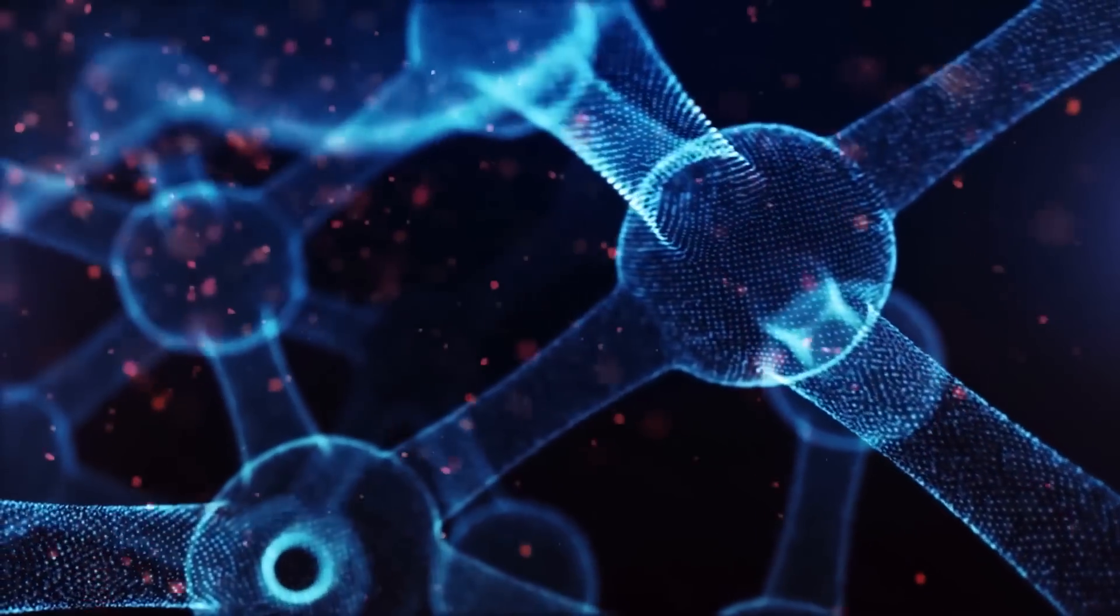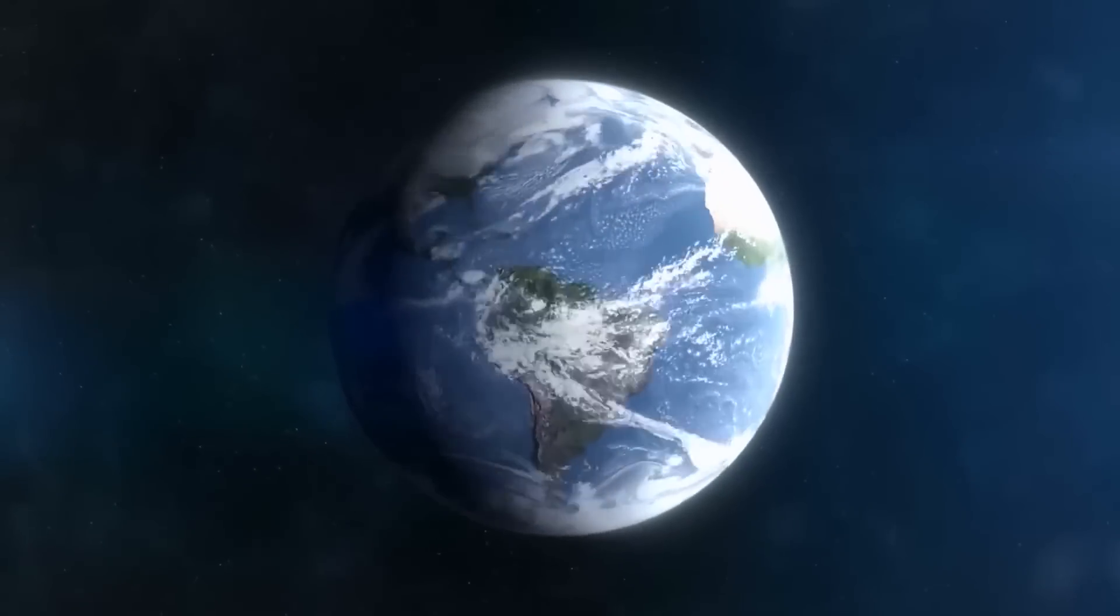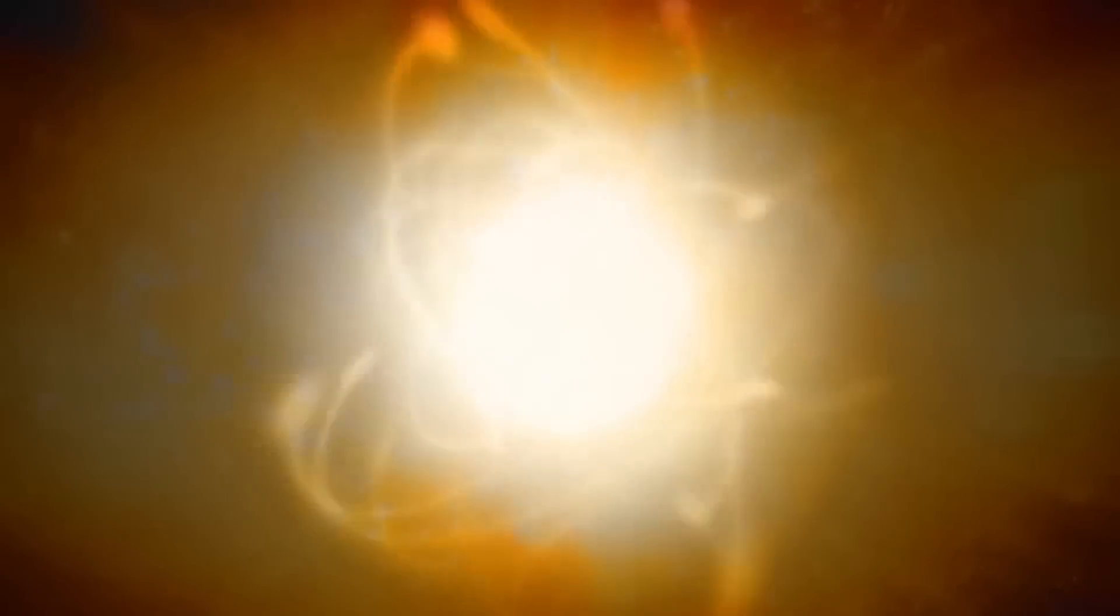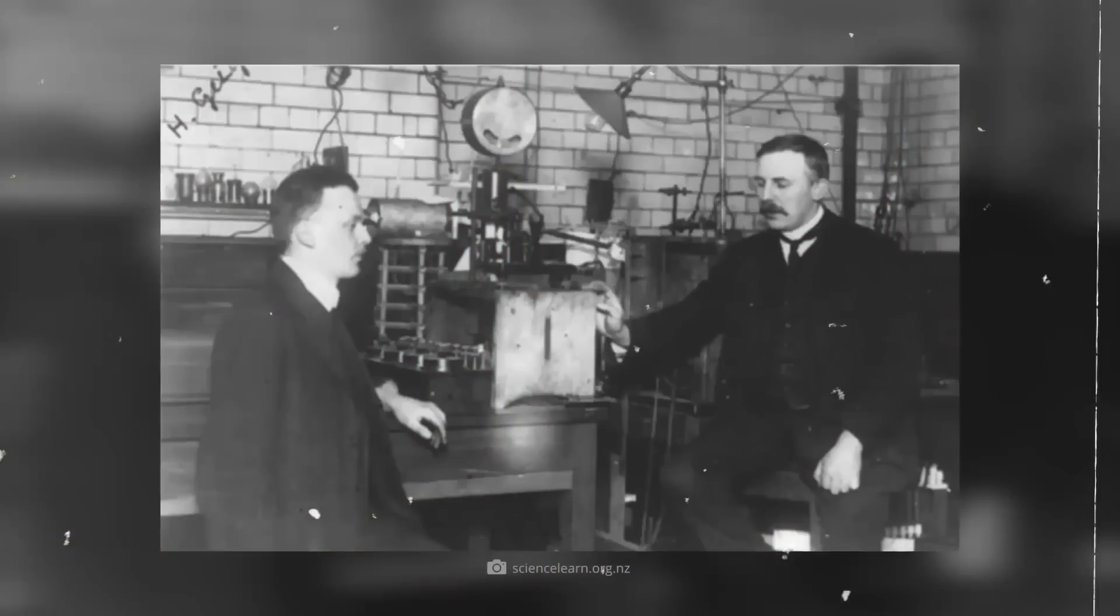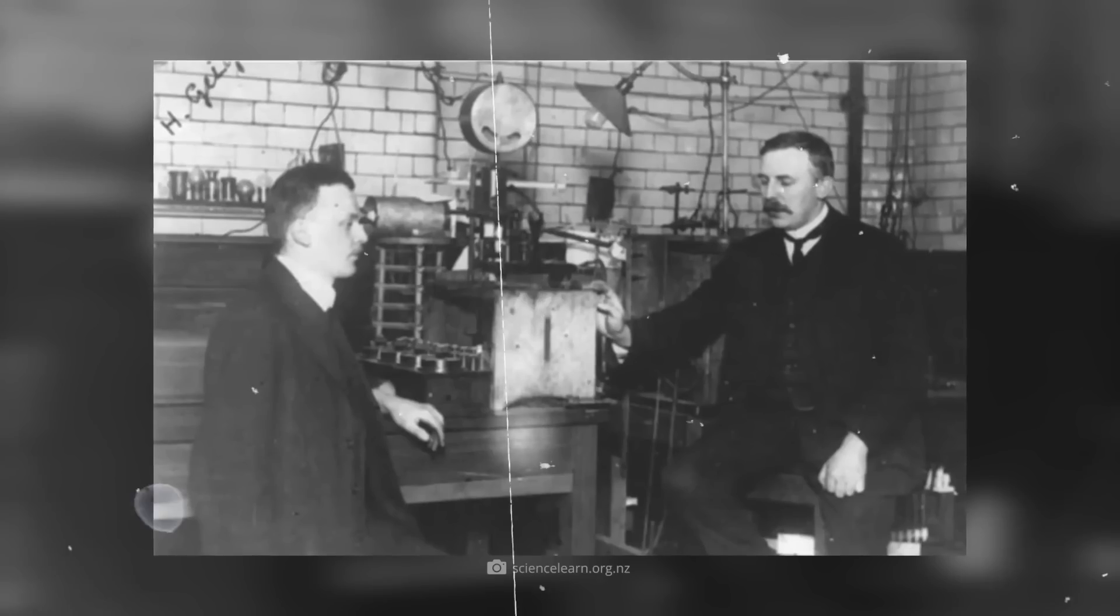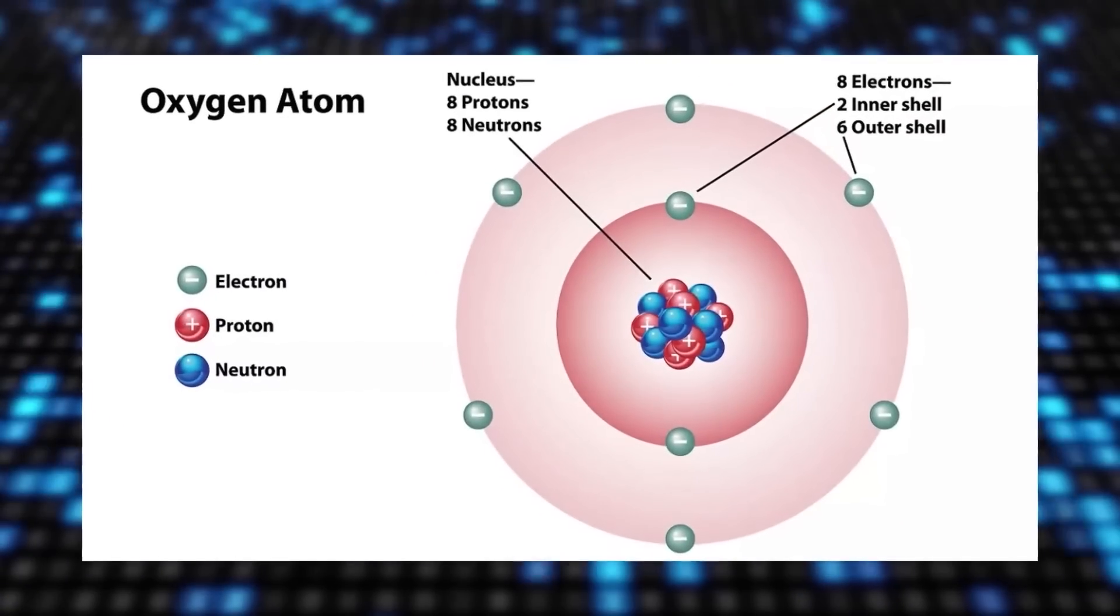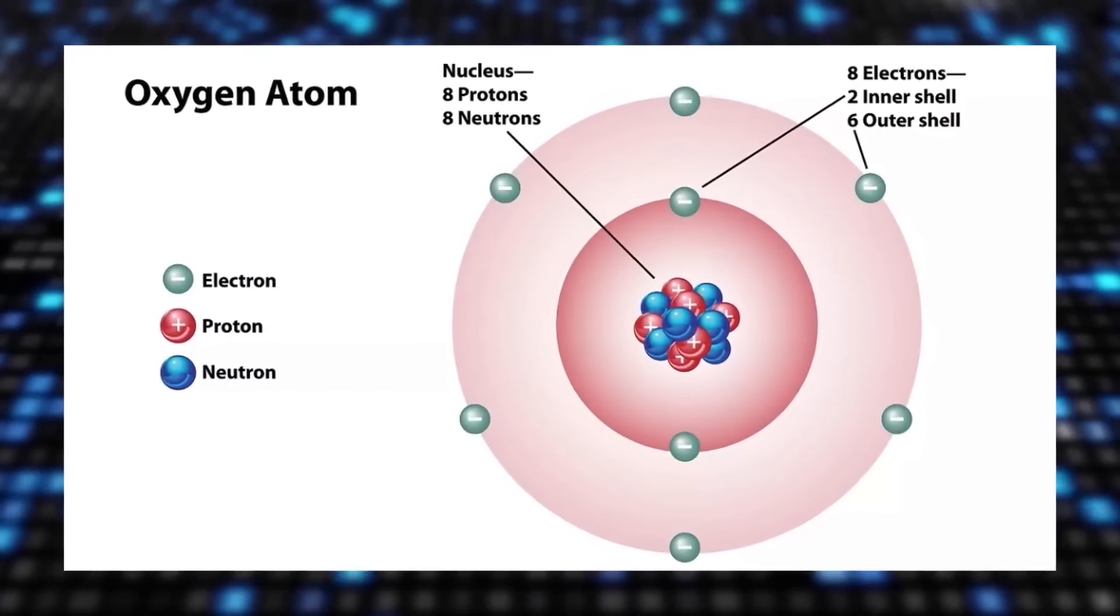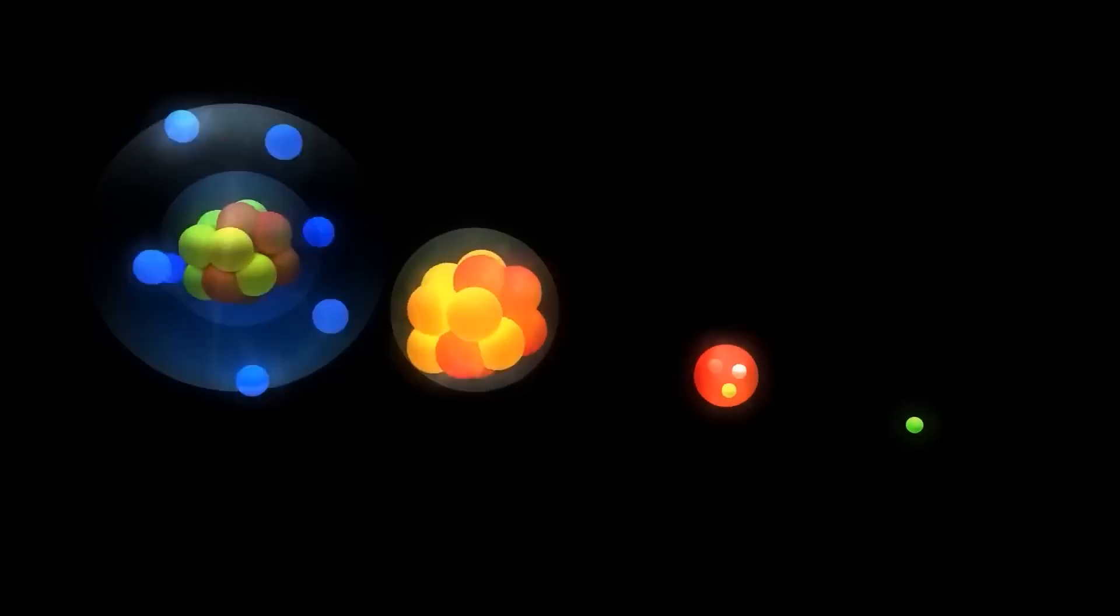To start off with, atoms are the basic building blocks of the matter. Everything in the universe is composed of matter except energy. Atoms were initially considered to be inseparable particles, but later research led to the breakthrough that atoms are made up of three subatomic particles, which are protons, neutrons and electrons. These subatomic particles are made of much smaller particles known as quarks.